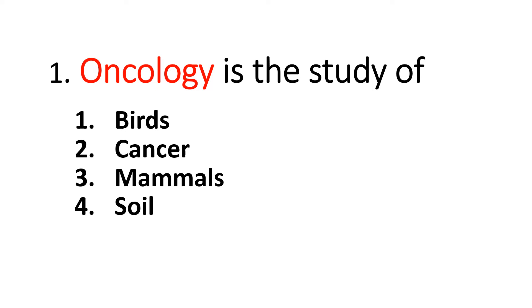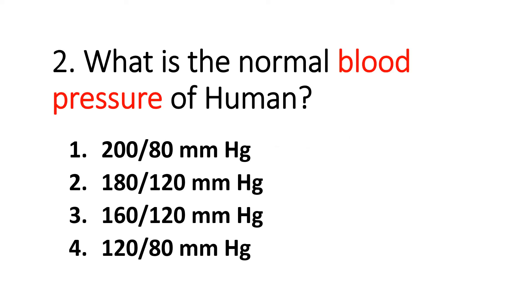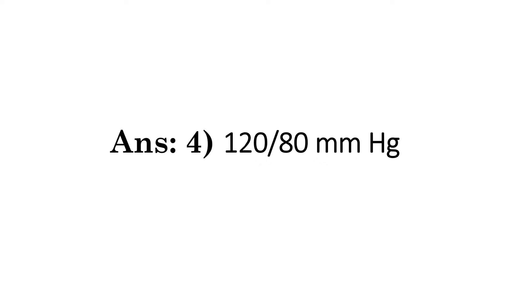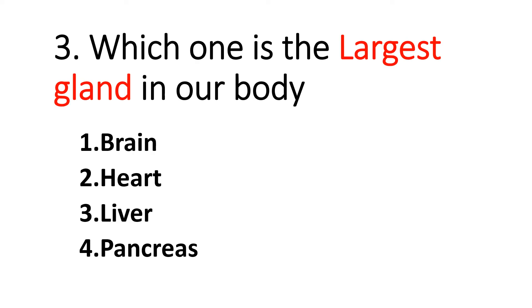Question number one: Oncology is the study of — answer: birds. Question number two: What is the normal blood pressure of human? Answer: 120 by 80 mmHg. Question number three: Which one is the largest gland in our body? Answer: liver.